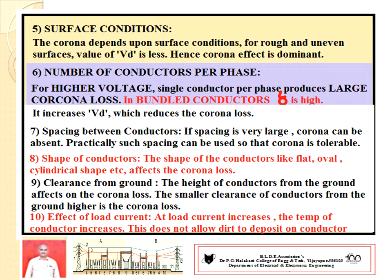The next factor is spacing between conductors, represented as small d. In general, if spacing between conductors is very large, then corona loss will be absent. But practically, such spacing cannot always be used — the corona should be tolerable, as we cannot select an excessively large distance; it is limited by technical and economical constraints. Shape of conductors — like flat, oval, cylindrical shape, etc. — also affects the value of Vd and corona loss.